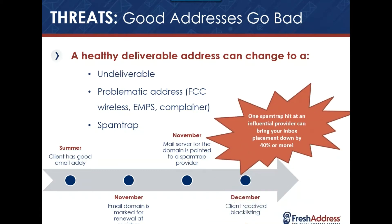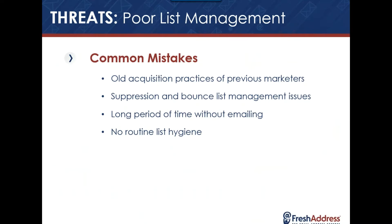The final category is poor list management. Common mistakes occur with old acquisition practices, previous marketers doing things differently, or lists acquired in ways they shouldn't have been. You have no idea where those emails came from or how good they are. A long period of time without emailing and no routine list hygiene is dangerous — email addresses can go bad. You must maintain routine list hygiene at all times to keep the cleanest list and campaign possible, otherwise it could cost you your inbox placement.